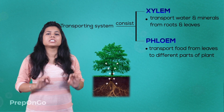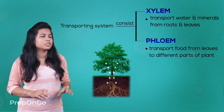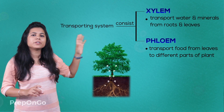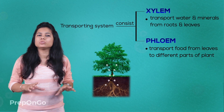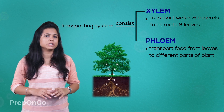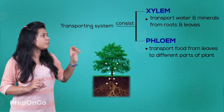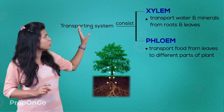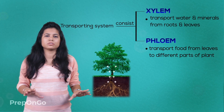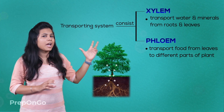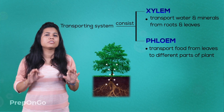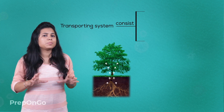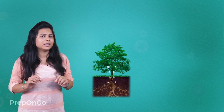Xylem is responsible for the transportation of water and minerals from the roots to different parts of the plant, mainly to the leaves for photosynthesis. Phloem is responsible for the transport of food from the leaves to different parts of the plant. Xylem and phloem play a major role in transportation in plants.